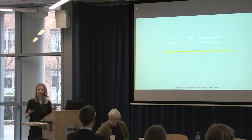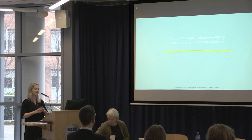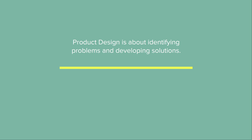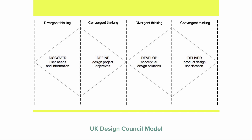My definition of product design is that it's about identifying problems and developing solutions. It can sometimes be associated with making something look good or being a nice case for some technology, but it's really about identifying real-world user needs and coming up with elegant solutions. There are many different design models, but a simple good one is the UK Design Council model, which has four stages: Discover, Define, Develop, and Deliver.